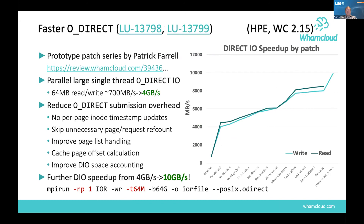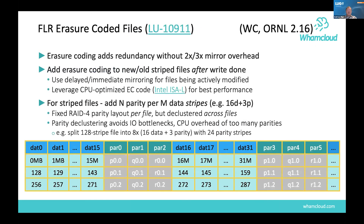O_DIRECT should always have been fast since it avoids CPU copies of data between user space and kernel space, but there are some internal bottlenecks. With a series of patches — peeling the proverbial onion to remove bottlenecks — there is a significant performance improvement available for single-client and even single-thread performance. This improvement is expected to land in 2.15.